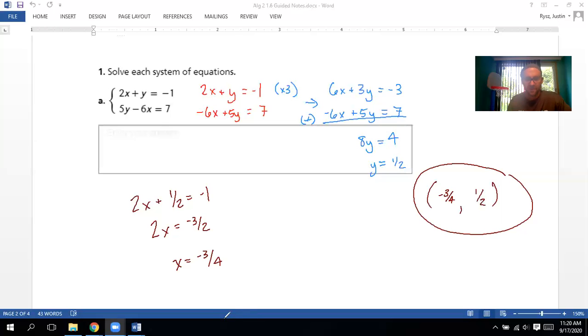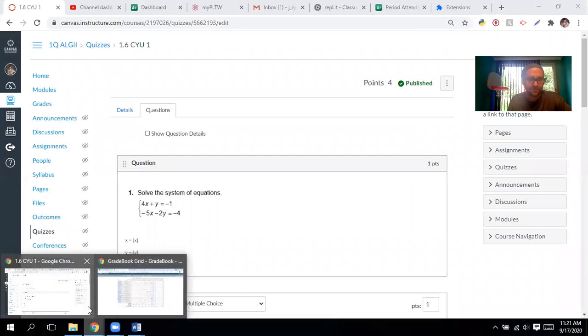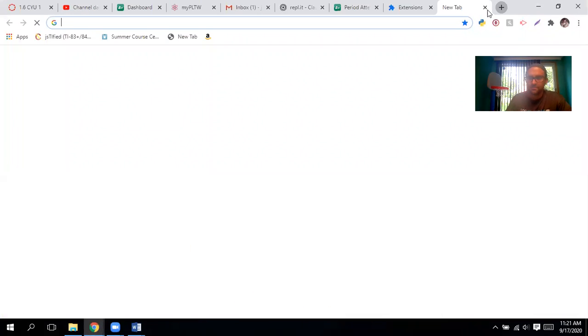And once again, we can always verify this by checking on Desmos and graphing these. So that's what I'm going to do next. So I'm going to clear this out. Negative three fourths, one half. Just kind of remember that or go back to the video to double check this. All right, so let's go to Desmos.